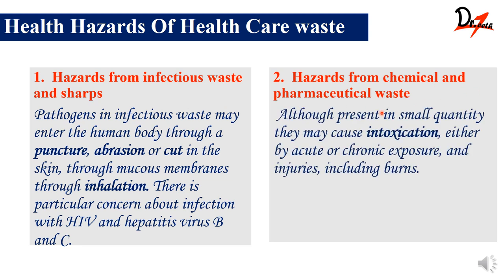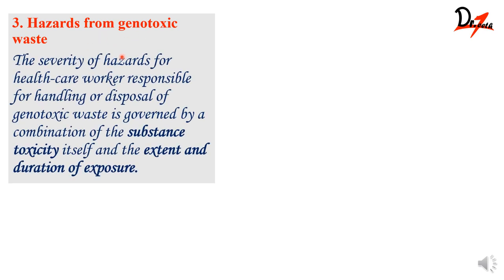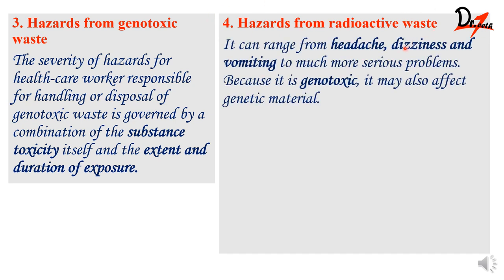Next are hazards from chemical and pharmaceutical waste — acute or chronic exposure, injuries or burns may lead to toxication, and that is the main hazard. Hazards from genotoxic waste mainly affect the healthcare workers handling them, and the severity is governed by the combination of substance toxicity and duration of exposure. Hazards from radioactive waste can include headache, dizziness, vomiting, and these are genotoxic too — they can affect our genetic material.